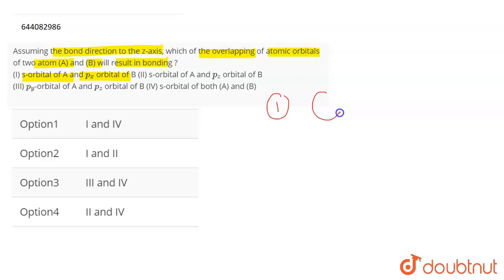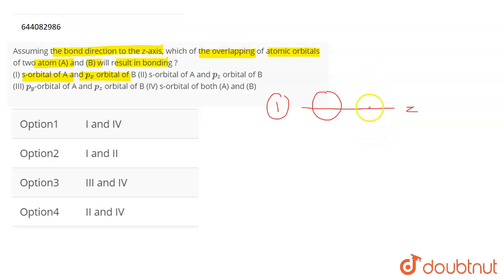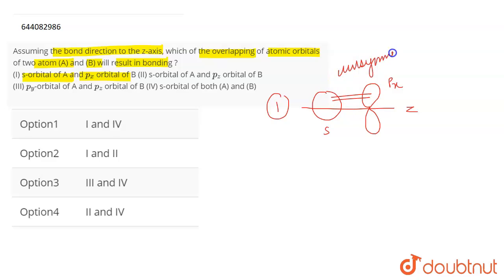In the first case, we have the s orbital, which is spherical and extends in all directions — it does not depend on the x, y, or z axis. If we consider the z molecular axis, the px orbital is oriented perpendicular to it. The overlap is going to be unsymmetrical, and unsymmetrical overlapping means no bond formation will take place.